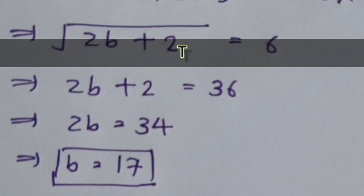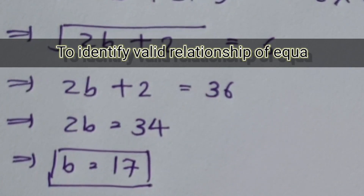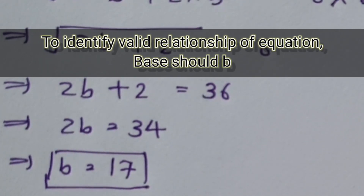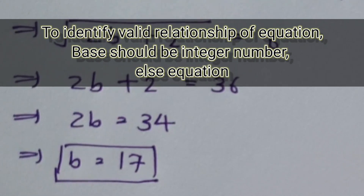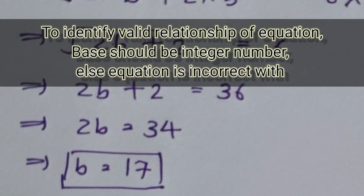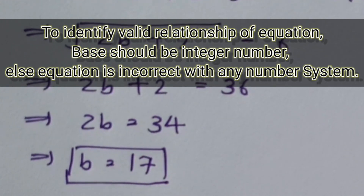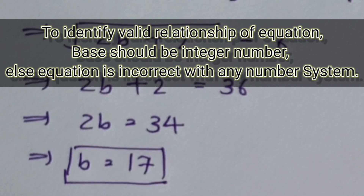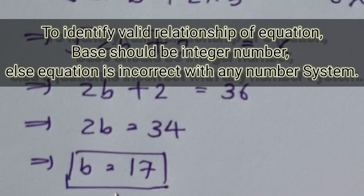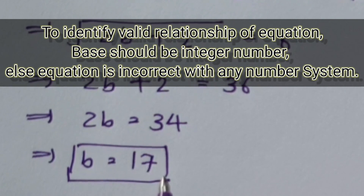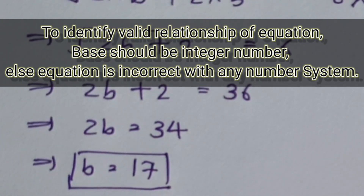Here is an important understanding: whenever a system is given and we are asked whether the equation is valid or not, we identify the base. If that base is not an integer — for example, if we get 17.5 or 17.2 — then it is an invalid radix or invalid base. Whatever base or radix we calculate must be an integer for the calculation to be correct.